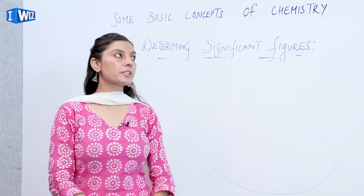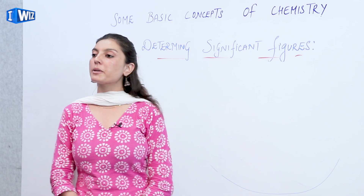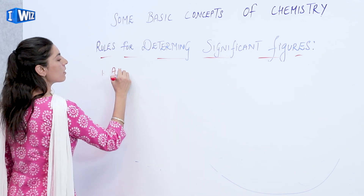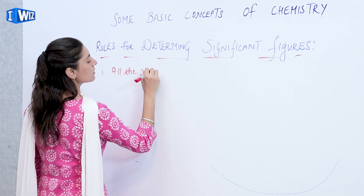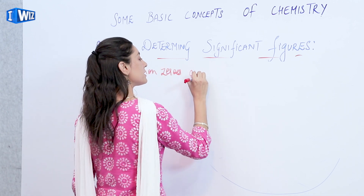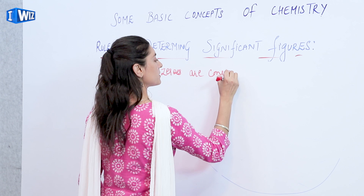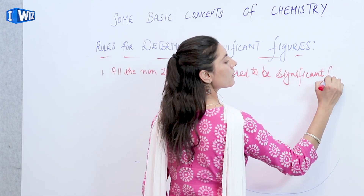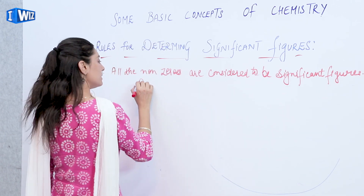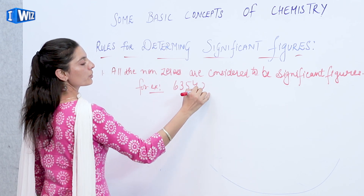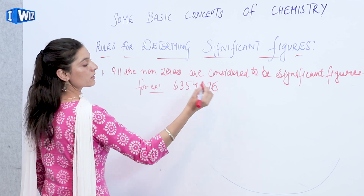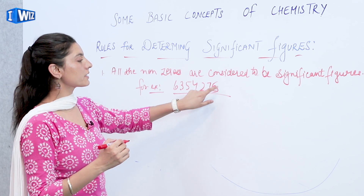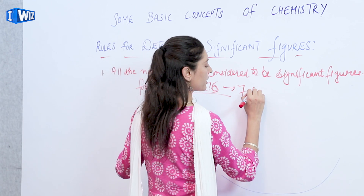Next, we have the rules for determining the number of significant figures in a particular value. The very first rule is: all non-zero digits are considered to be significant figures. For example, 6, 3, 5, 4, 2, 7, 6 — we have 7 significant figures here. Even if we are taking the number in decimal form, for example 6.023 — which is Avogadro's number — it has 4 significant figures: 1, 2, 3, 4.